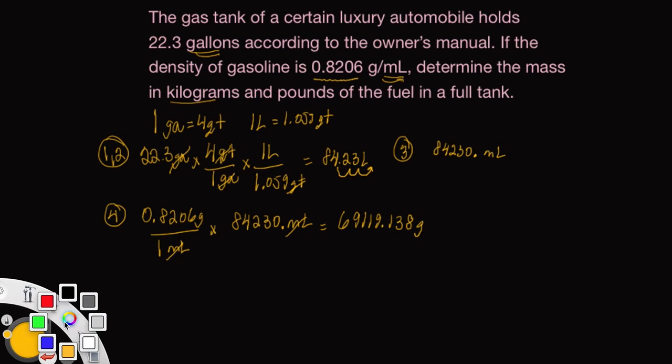Now, one of the final steps here is to convert this grams to kilograms. Kilo means 1,000, so we want to move this decimal place over 1,000 - I mean, three spots - between the nine and the one there. And that gives us, for step five, 69 point all this stuff kilograms.